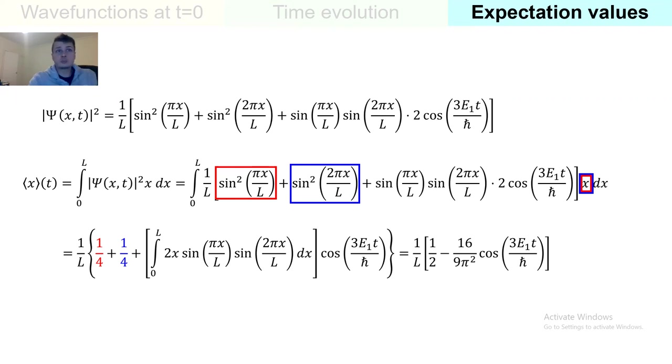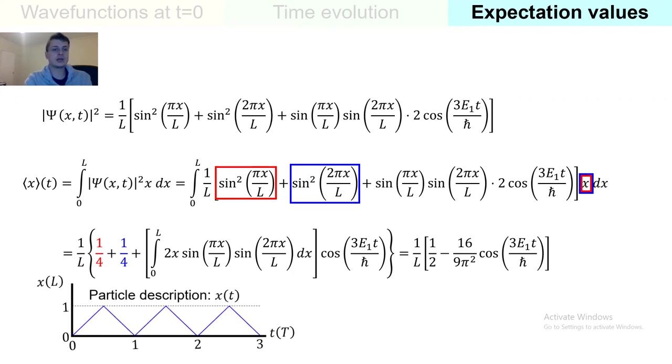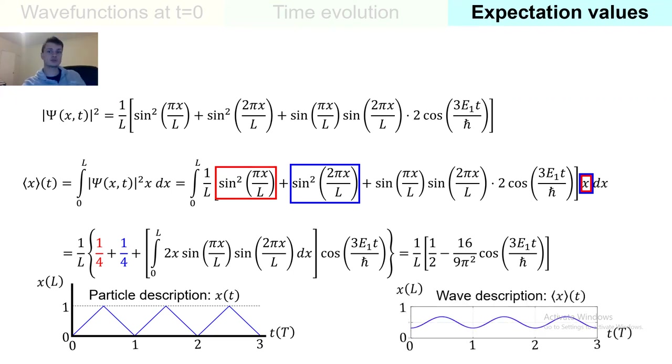Anyway, now it's time to bring back the position dependence within the particle description of the problem. If you remember, it was a triangular function. If you compare these to the result we have just obtained implementing the wave description, we see that it is indeed a function that oscillates around the center of the well, but it does so in a less sharp way. In fact, it never reaches the boundaries of the well.